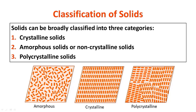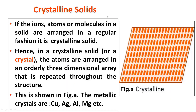Here the three types are pictured. The first one on the left is amorphous solid, the middle one is crystalline solid, and the one on the right is polycrystalline solid. The picture of crystalline solid is shown enlarged. If the ions, atoms or molecules in a solid are arranged in a regular fashion, it is a crystalline solid — they are arranged in a regular pattern.